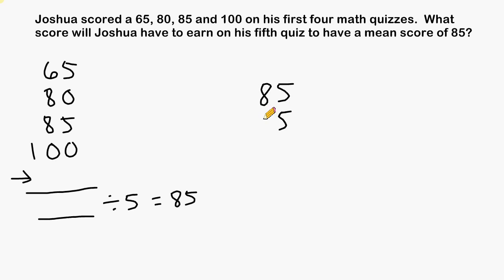So we can take 85 and simply multiply that by 5. 5 times 5 is 25, carry the 2. 5 times 8 is 40, plus 2 is 42. So now we know that the total of all five of Joshua's scores must equal 425.